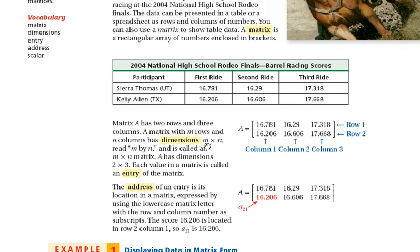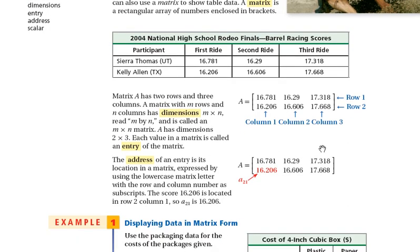We typically will talk about it as an M by N, where we go the number of rows by the number of columns. Columns go up and down, rows go left to right, and so this example right here is showing us a 2 by 3 matrix. For every number that we have inside the matrix, we give it an address, and so this address right here is a sub 2 1, looks like 21, but that just indicates that it is row 2, column 1.